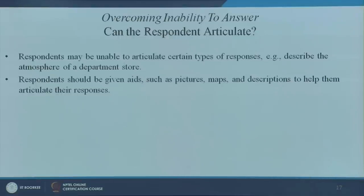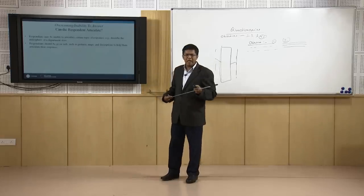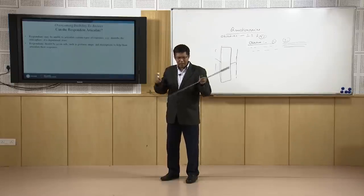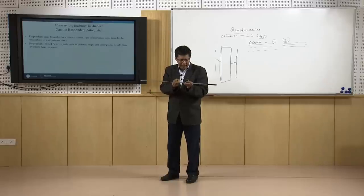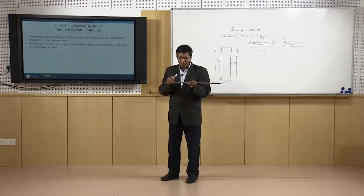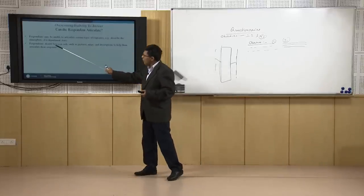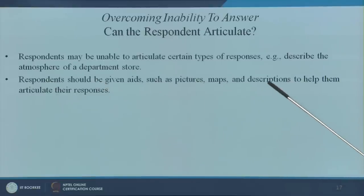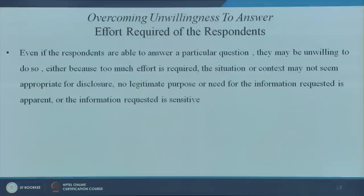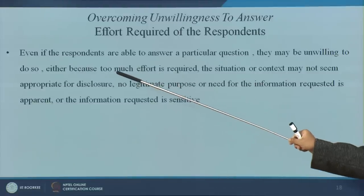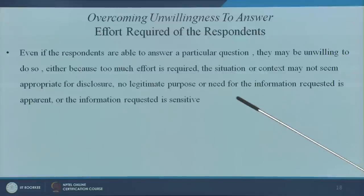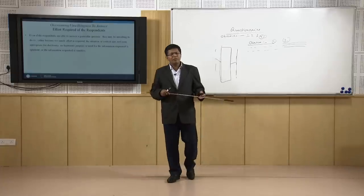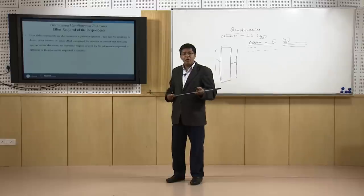Articulation becomes another issue — for children or less-educated people, even if they remember, expressing the answer is hard. As I mentioned with continuous scales, a diagrammatic representation — a line from very large to very low — makes it easy for respondents to say 'somewhere here.' Respondents should be given aid such as pictures, smileys, maps, or descriptions to help articulate their responses. Sometimes respondents are unwilling because too much effort is required, the context does not seem appropriate, or the information requested is sensitive.